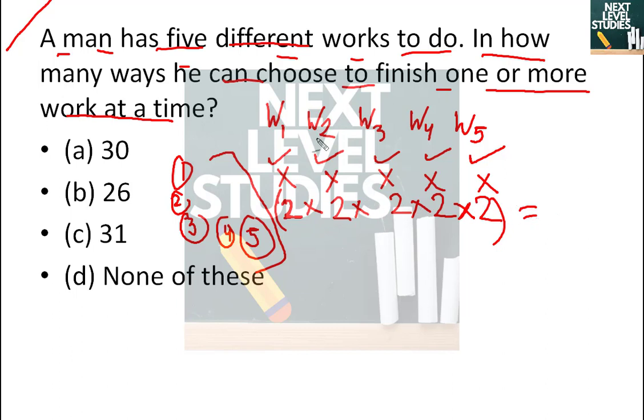This is the fundamental principle of counting. If you have to do two jobs, then you multiply. If you have a choice, then you have to add.